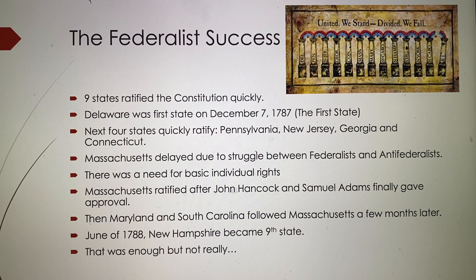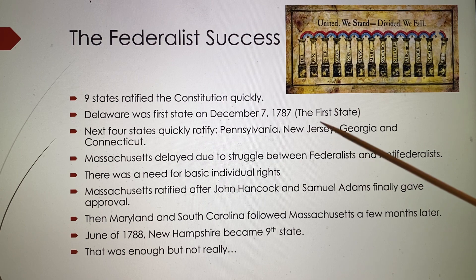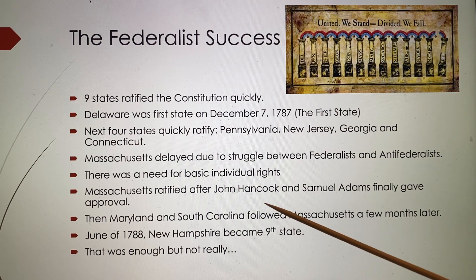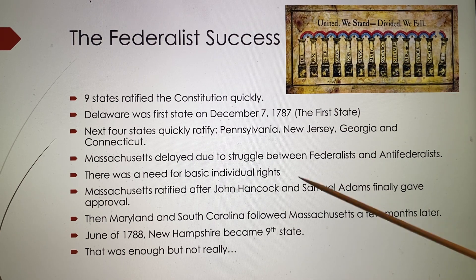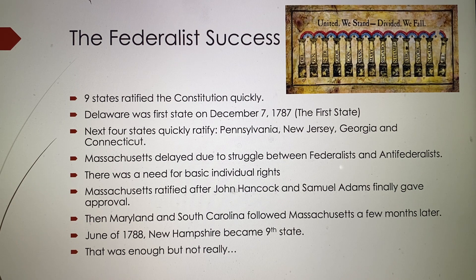But they couldn't truly be a nation without the big states. Virginia and New York had not yet ratified. In Virginia, Anti-Federalists led by Patrick Henry and George Mason put up a powerful struggle. Finally, the Federalists led by James Madison and Governor Randolph swung enough votes, and Virginia ratified on June 25th, 1788 — with the stipulation that a Bill of Rights must be added.